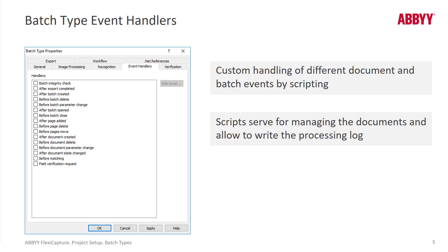When you set up a batch type, you are walked through a wizard, and each screen of the wizard corresponds to one of the tabs. If you want to edit a batch type after it's been created, you can, and you see these various tabs. One of the tabs is the Event Handler tab, and these are all scripting entry points — so you can apply code at certain points in the workflow.